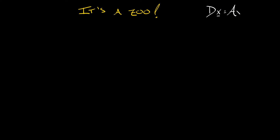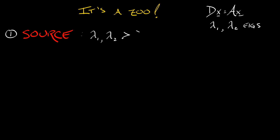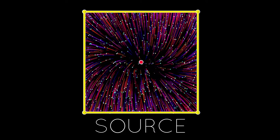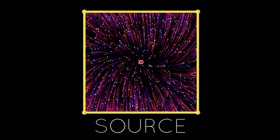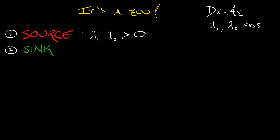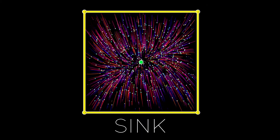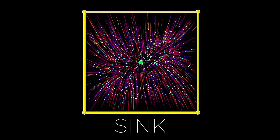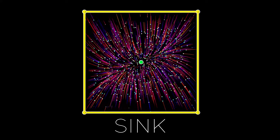If you have a linear system dx equals Ax with eigenvalues lambda 1, lambda 2, here's what the origin can look like. First of all, we can have a source. This is what happens when lambda 1 and lambda 2 are both strictly positive, and everything rushes out away from the equilibrium at the origin. Second is called a sink — kind of the reverse of a source — where lambda 1 and lambda 2 are both negative. We have a pair of stable eigenvalues and everything is exponentially decaying to zero. In terms of a flow diagram, everything just goes into that center.